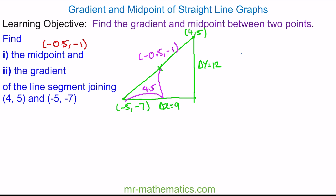For our gradient, this is the change in y divided by the change in x, which we know is 12 divided by 9, which simplifies to make 4 thirds.